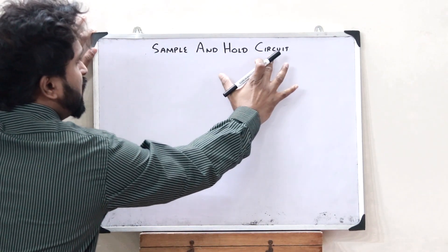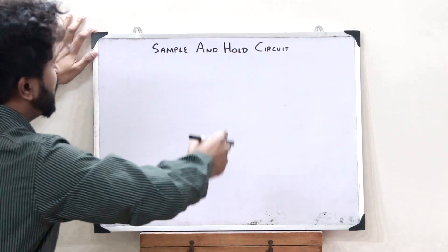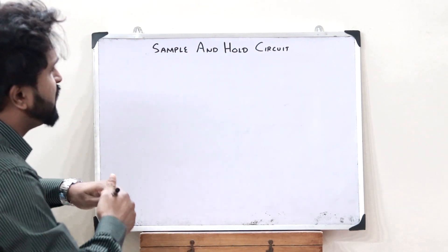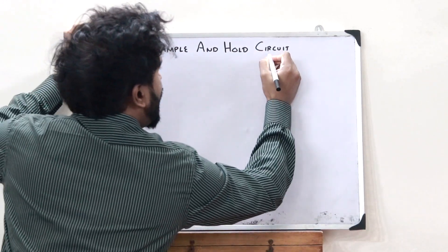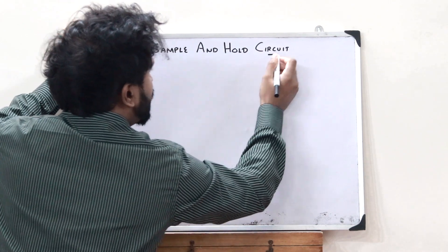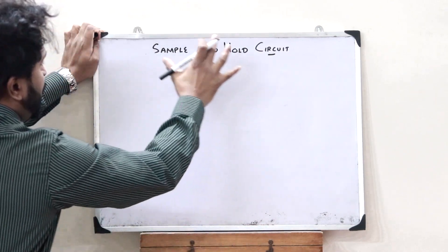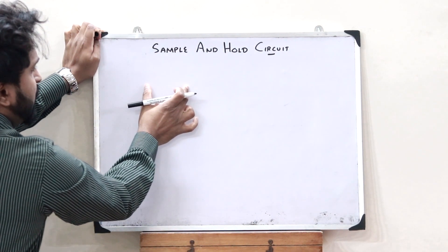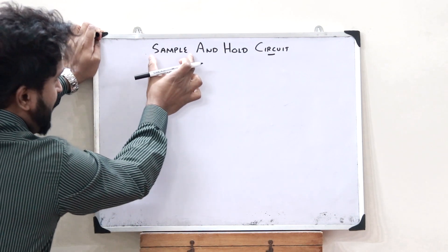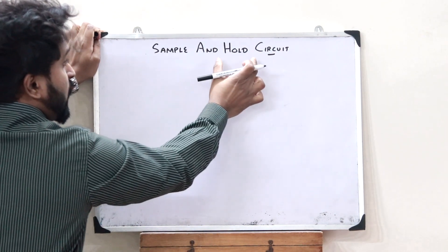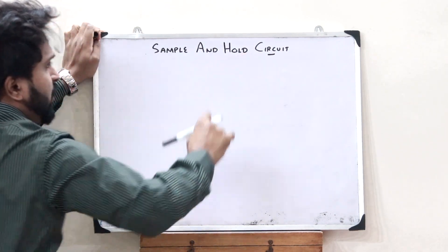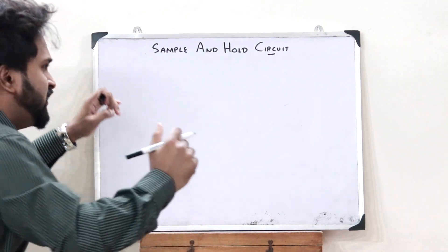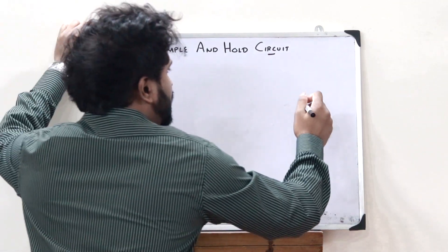Sample and hold circuit — just like the name suggests, this is a type of circuit that first samples a particular signal, and after sampling the signal, it holds that particular signal. Let me make that very simple for you.